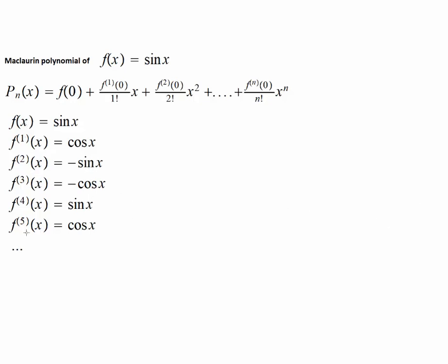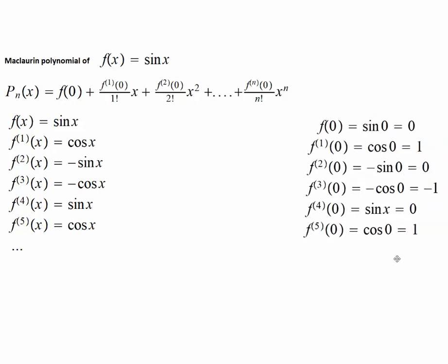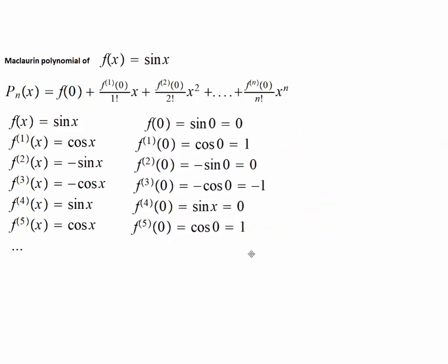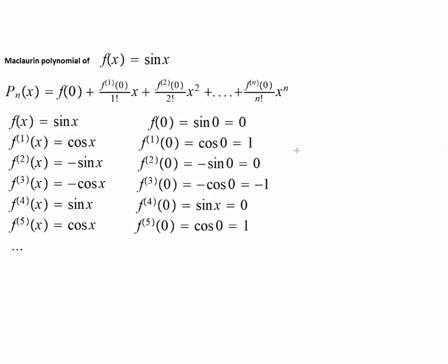Now we evaluate the function and its successive derivatives at 0. f(0)=sin(0)=0, f'(0)=cos(0)=1.